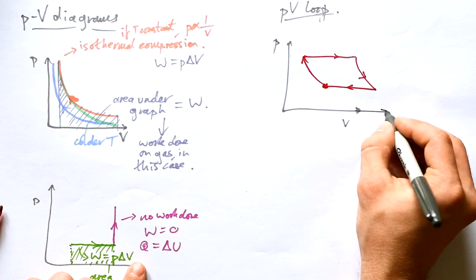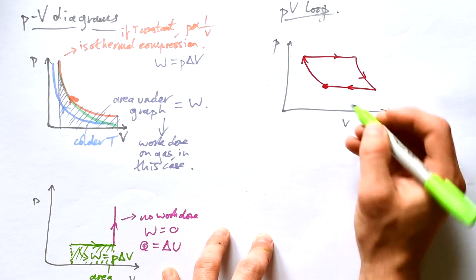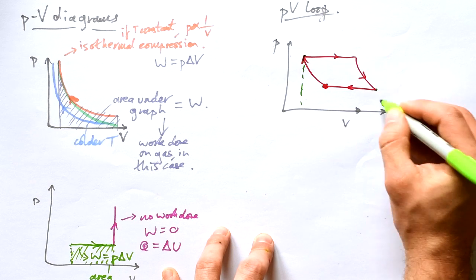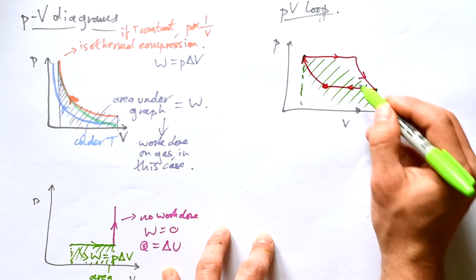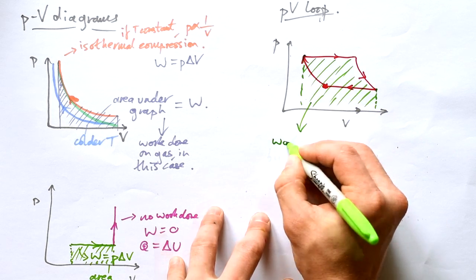Let's extend this. So let's just have a look at the area under the graph for when the volume is increasing. So that's from here to here.